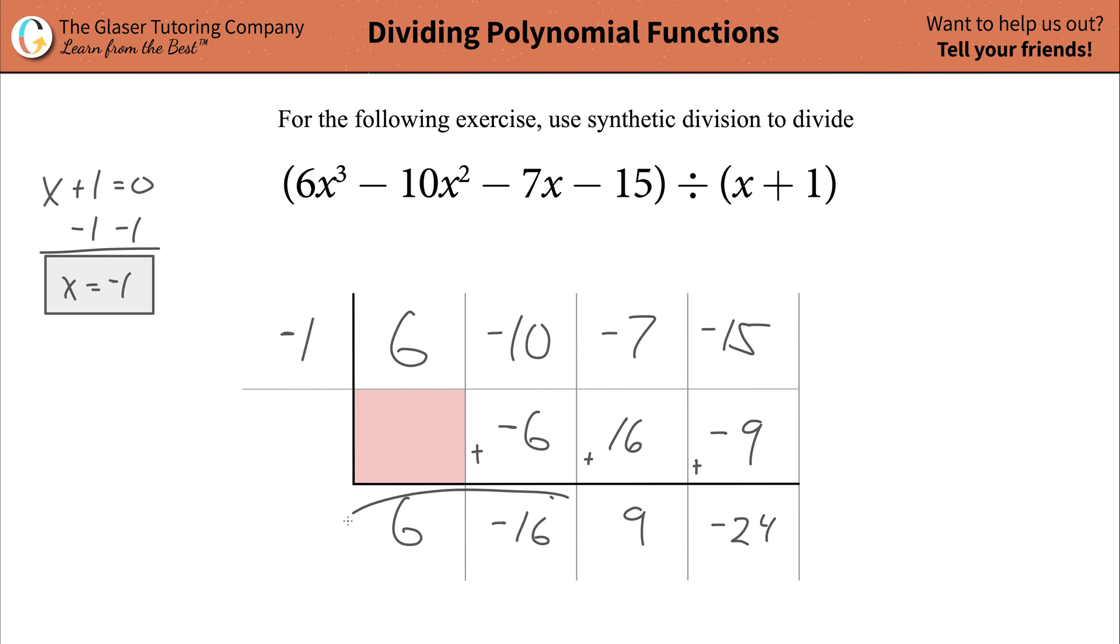We now have found our coefficients of our quotient and the remainder. Now, one quick note. If the coefficient of your x term in your divisor is something other than a 1, then there is going to be an additional step you have to do.